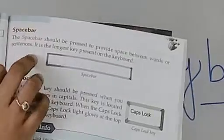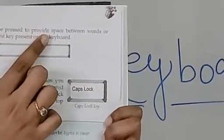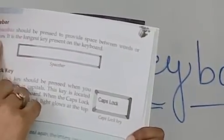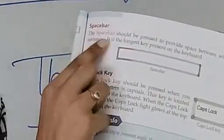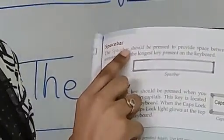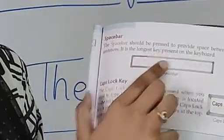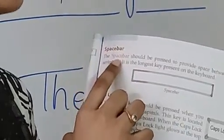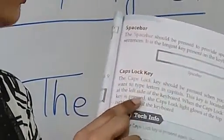Next is the space bar key. The space bar key should be pressed to provide space between words or sentences. It is the longest key present on the keyboard. When we want to provide space between the words or a sentence, we should press the space bar key, and it is the longest key on the keyboard.